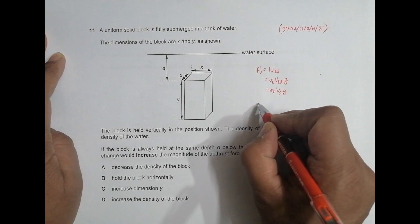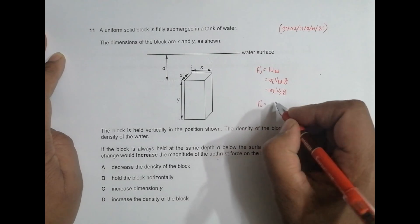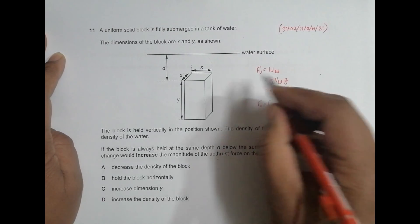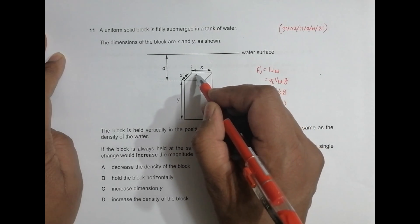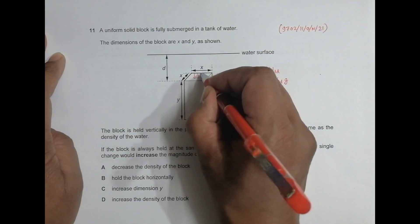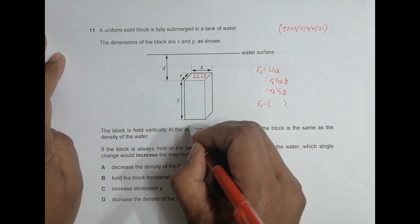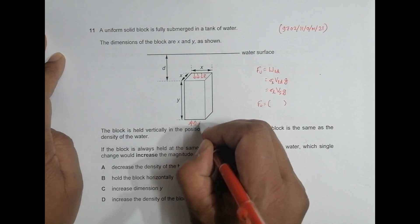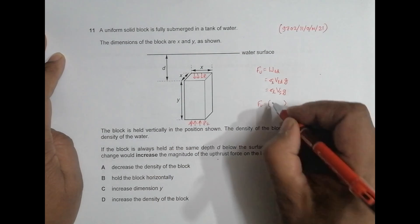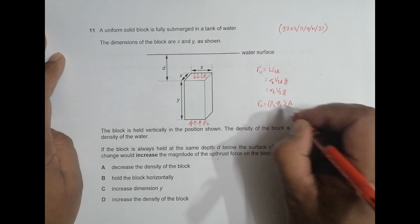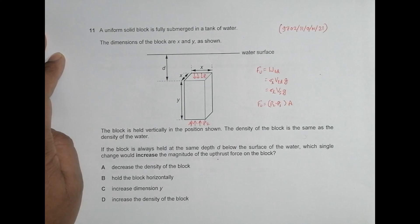And another formula is, we have Fu is equal to pressure difference. Pressure difference at the upper surface, which is P1, and the downward surface, which is P2. So it should be equal to P2 minus P1 into this area. So these are the two formulas for the upthrust force.